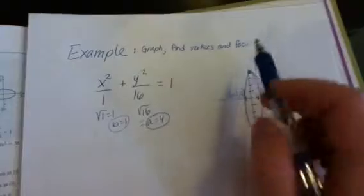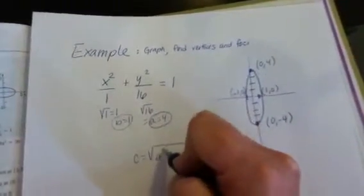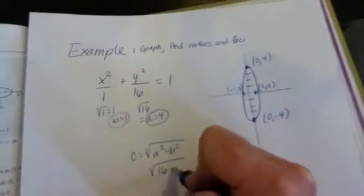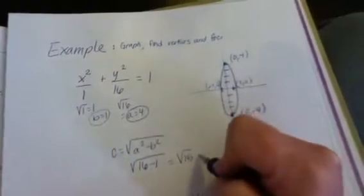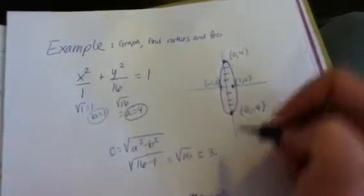Okay, then the last thing it asks us for is the foci, so we're going to go c equals the square root of a squared minus b squared. So that's the square root of 16 minus 1, or the square root of 15, which is almost 4, 3 point something, probably 3.8 or 3.9.